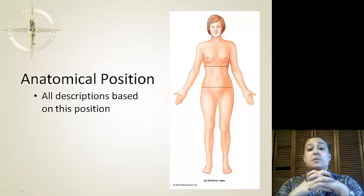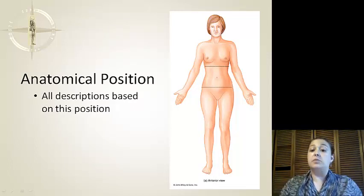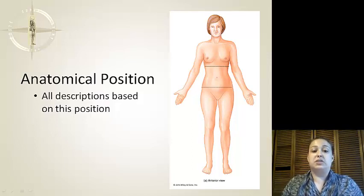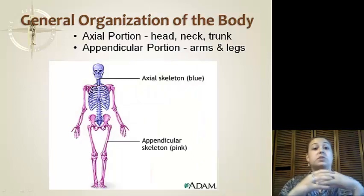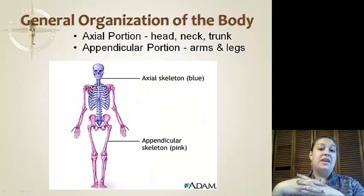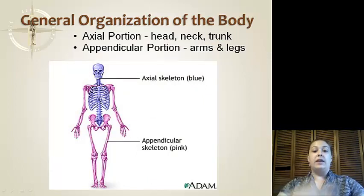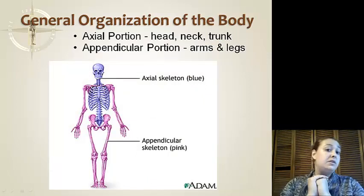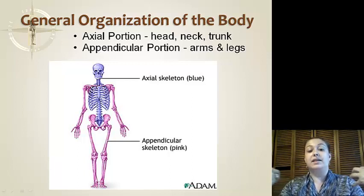So, anatomical positioning: standing straight forward, arms down, palms out. This is how all the descriptions are based — this is the anatomical position. General body organization: we have the axial portion, which is going to be our head, neck, and trunk area. And then we have all the appendicular portions, which are going to be the arms and legs.